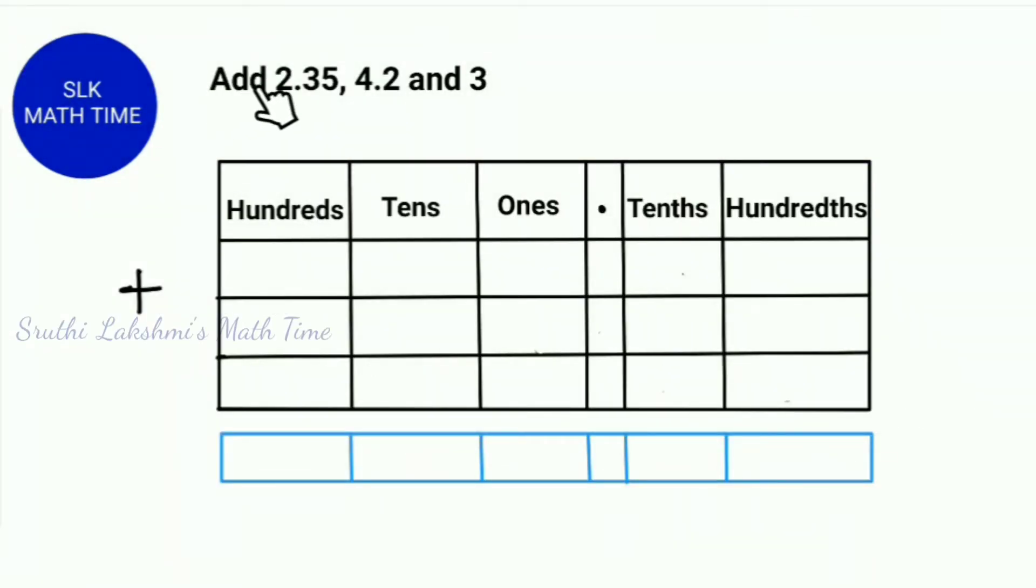Let's see an example. Add 2.35, 4.2 and 3. As you see, 3 is a whole number while 2.35 and 4.2 are decimal numbers. So, let's write 2.35. We write 2, then we put a decimal point, next 3 and 5.